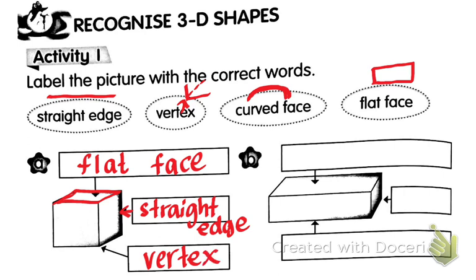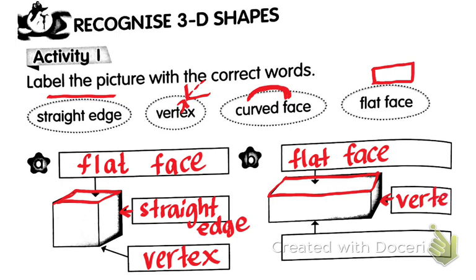Picture B, it's a cuboid. What is this again? This is flat face. How about here? It is vertex. How about this? Straight edge. Yes, this is straight edge. It's easy to recognize 3D shapes.